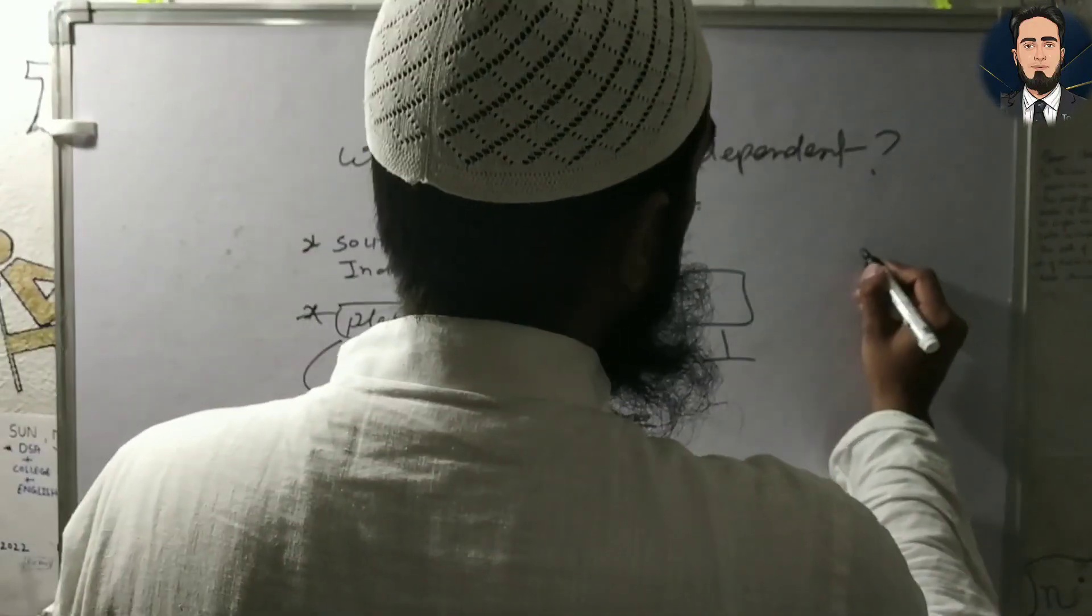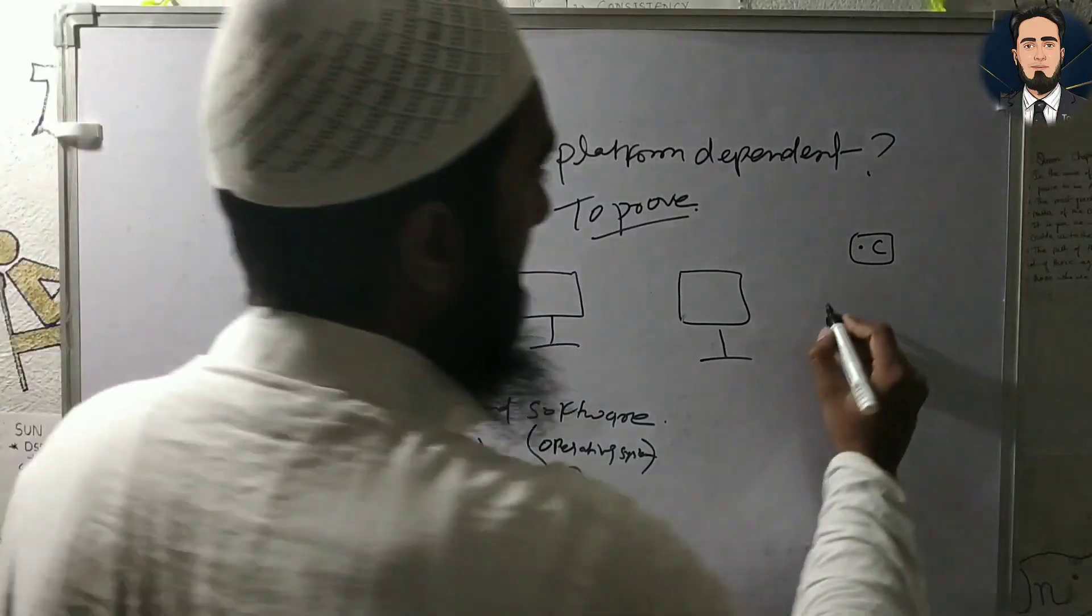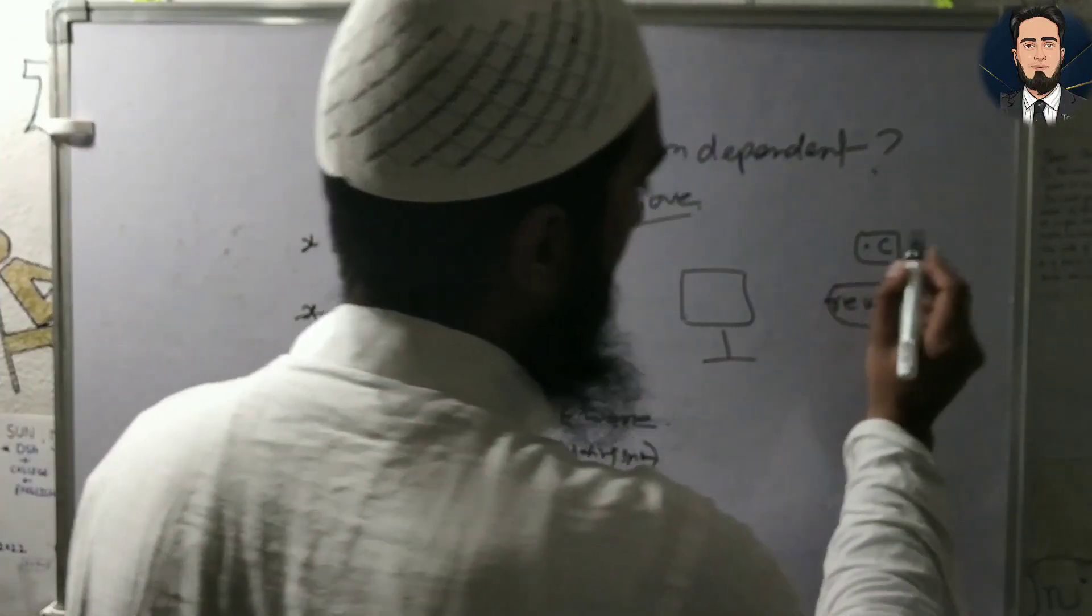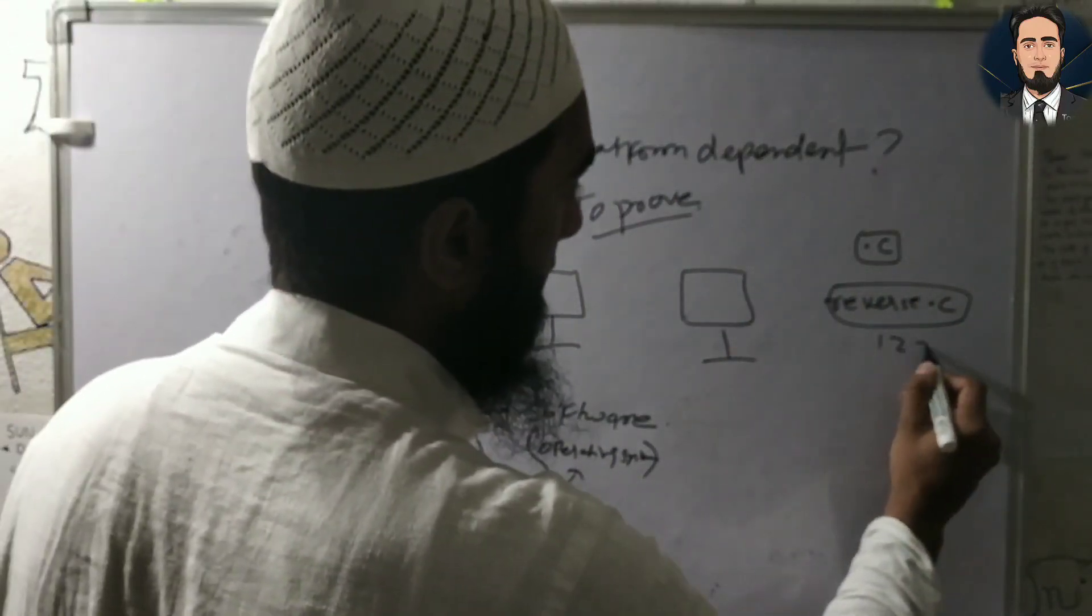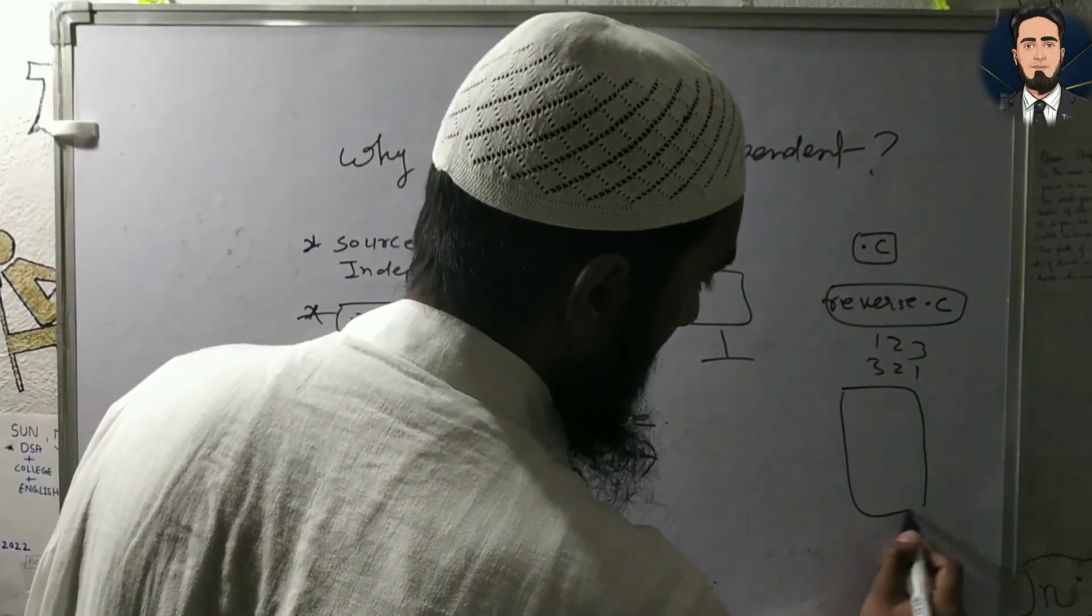The file is called .c, you all know. Suppose I have created a program reverse.c. You have created a program where a number is 123, and we can reverse this. So we have created a program, the file is called .c.